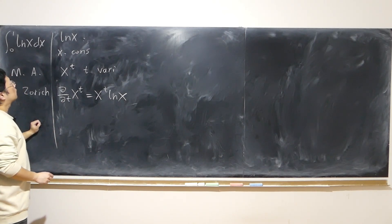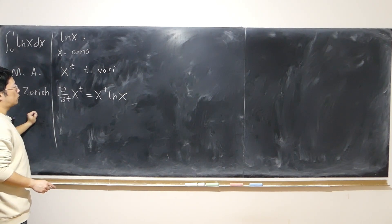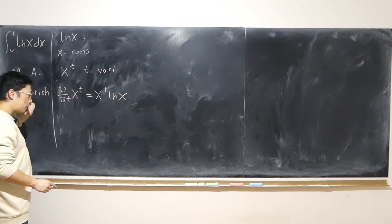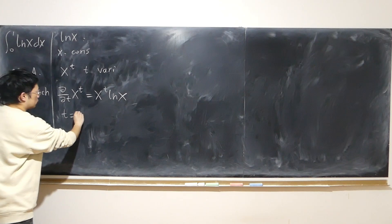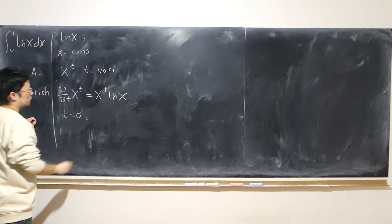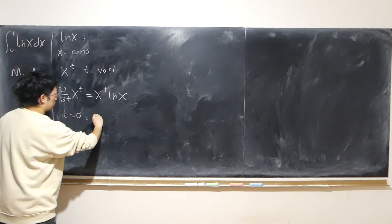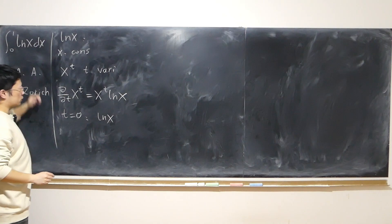So that way, that contains log x. How can I further relate to that? If I let t equal to 0, I immediately have 1 times log x. That's my integrand.